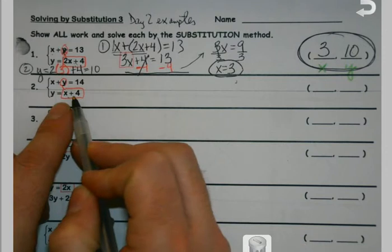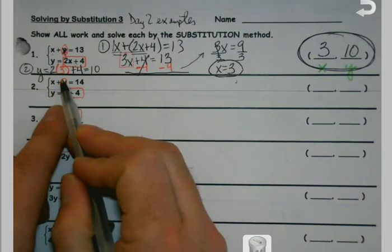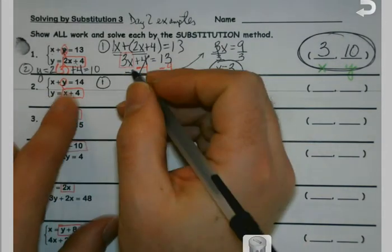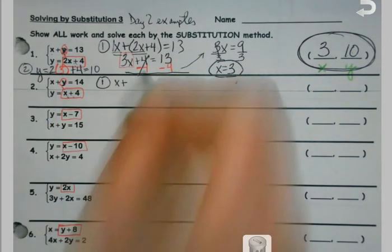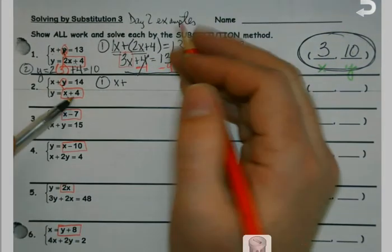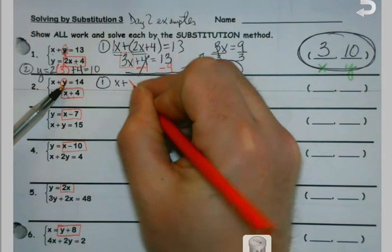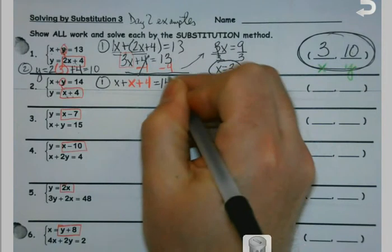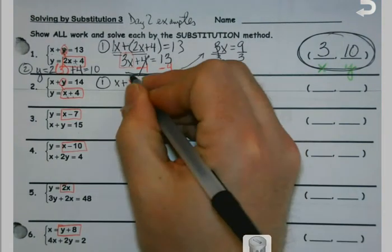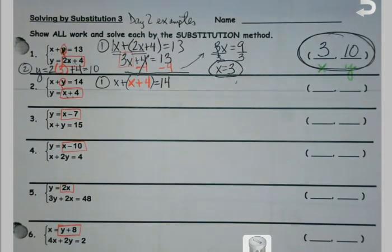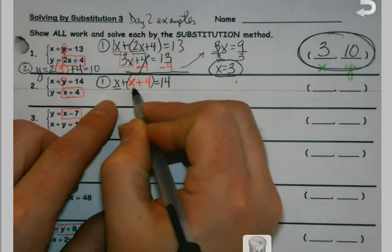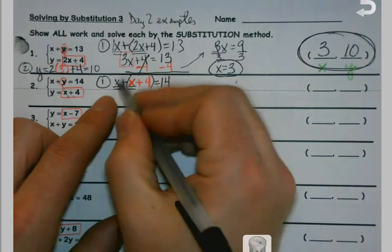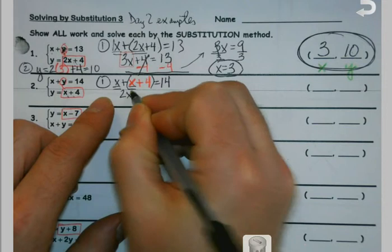Same idea. What's in the box goes in for that variable. So my first job, I've got x plus, remember my color this time, the box replaces the y. So x plus 4 equals 14. And I always like to put the parentheses around whatever I substitute just in case there happens to be a number in front. So I look and I'm like, got an x in each of those spots. So x plus x is 2x.